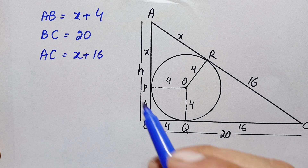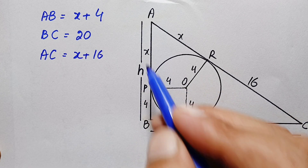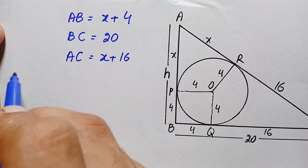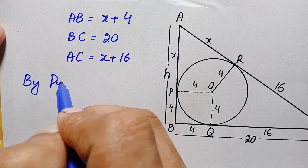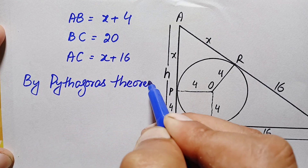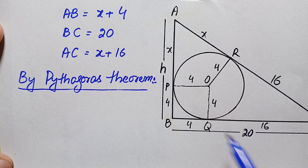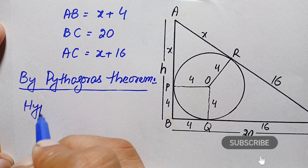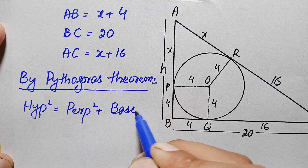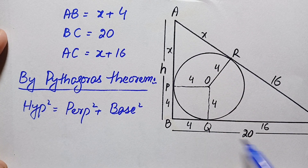Now our target is to find out the height of this triangle — the perpendicular AB. So we need the value of x. Since this is a right angle triangle, we apply the Pythagorean theorem. The Pythagorean theorem states that the hypotenuse squared is equal to the perpendicular squared plus the base squared. Here the hypotenuse is AC, the perpendicular is AB, and the base is BC.